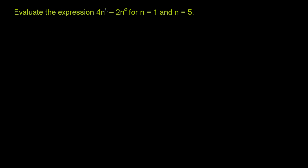Evaluate the expression 4n to the first power minus 2n to the zeroth power for n equals 1 and n equals 5.